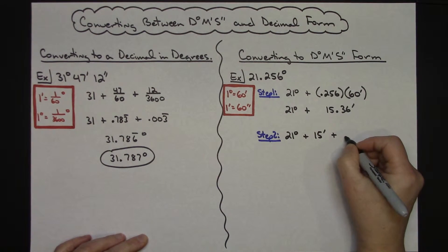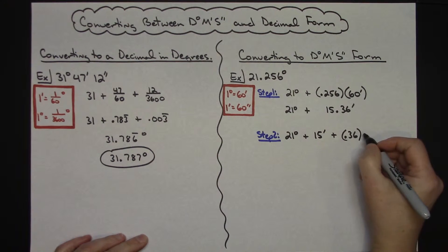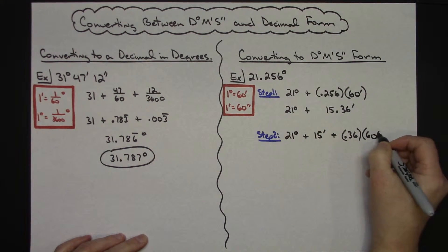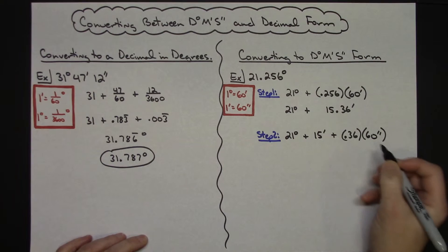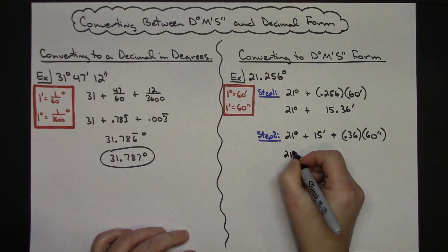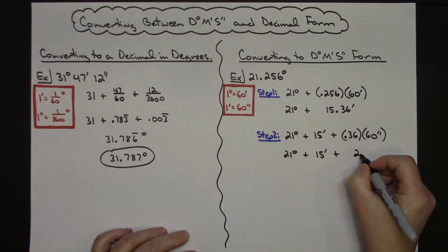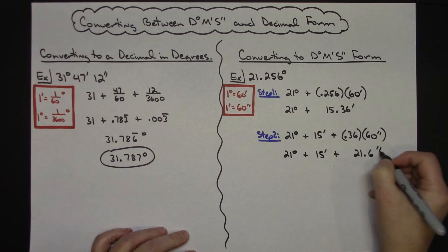So I'm going to add to that 0.36. Now I'm going to multiply by 60 again. This time it's 60 seconds because I'm going to convert this fractional part into seconds. Now you use a calculator there: the 21 degrees stays, the 15 minutes stays, and then this turns out to be 21.6 seconds.